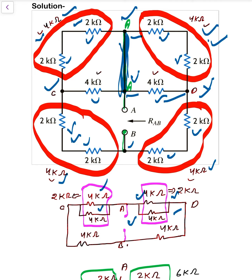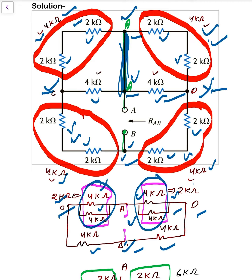After that, the four kilo ohm and four kilo ohm represent B to C and B to C, and similarly B to D and B to D. The parallel combination of each of these pairs gives 2 kilo ohm, and similarly the other combination also gives 2 kilo ohm.